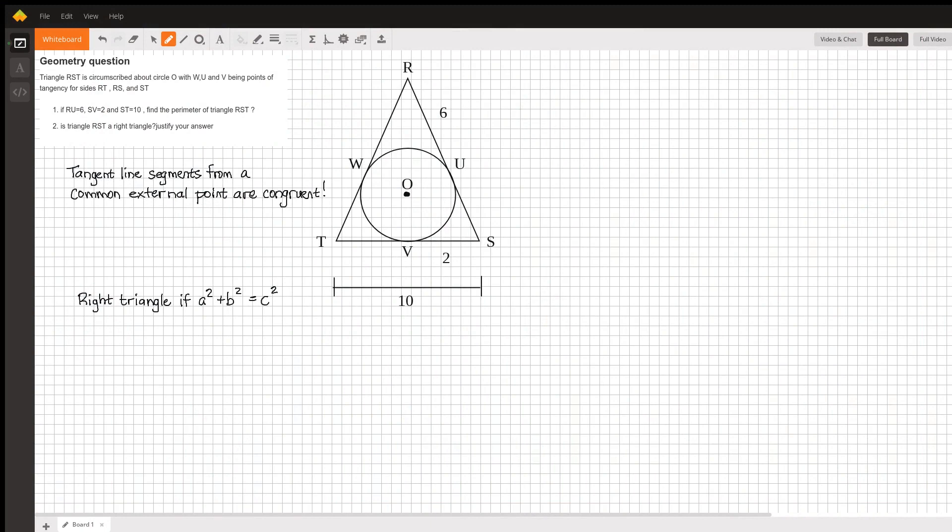This problem gives us triangle RST, saying that it's circumscribed about circle O, where we have points of tangency that are W, U, and V, as shown in the triangle, in between each of the sides RT, RS, and ST.